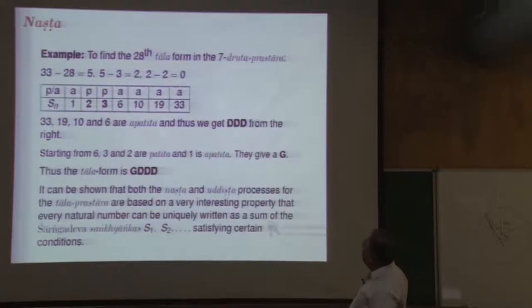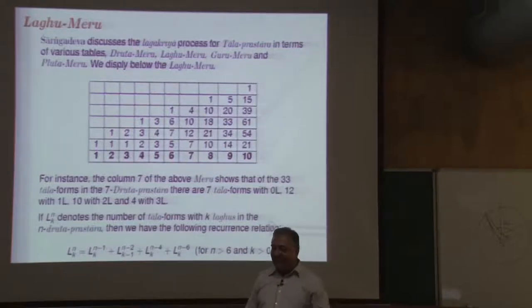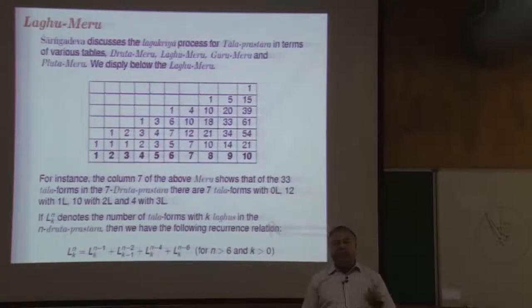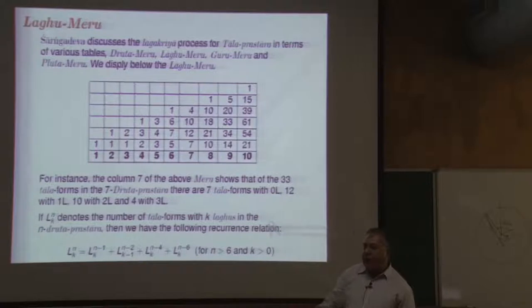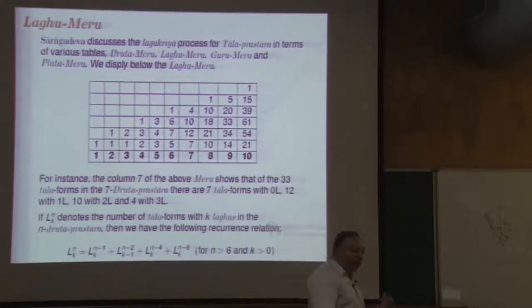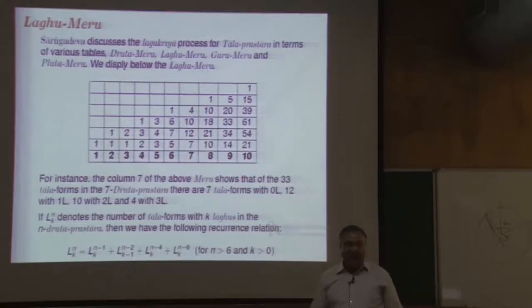What Narayana Pandita does is bring out a Meru — called the Unmeru, or High Meru — for the Nashta process. Instead of following the algorithm with complicated if-conditions, he gives you a tabular form against which you check. He does this for the case where the talangas have timing values 1, 2, 3, 4, up to Q, but we can see that the same Unmeru can be constructed even for talangas of values 1, 2, 4, 6 as Sangadeva uses.